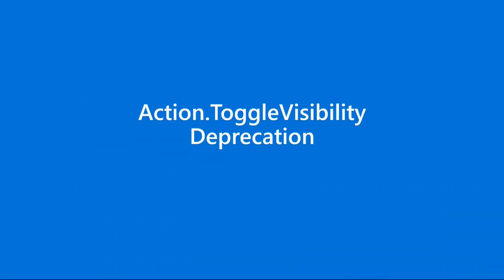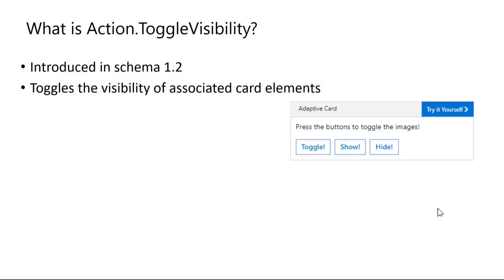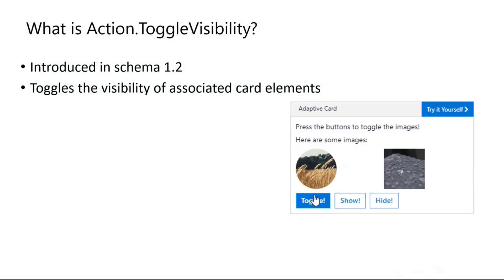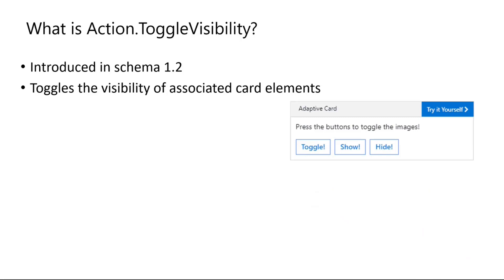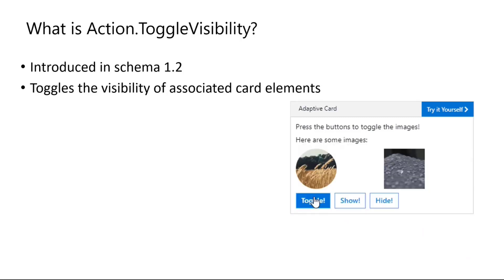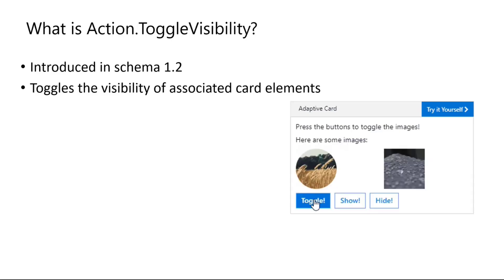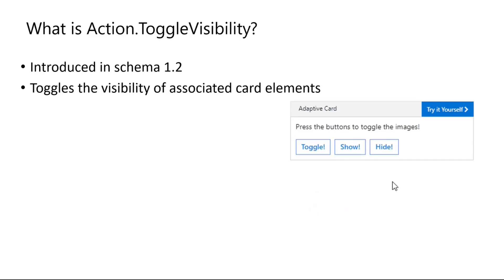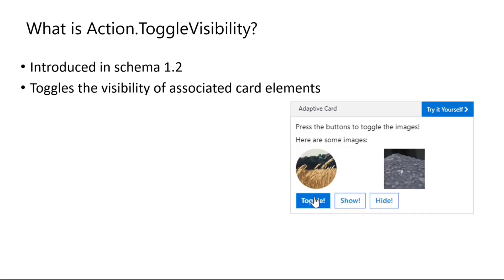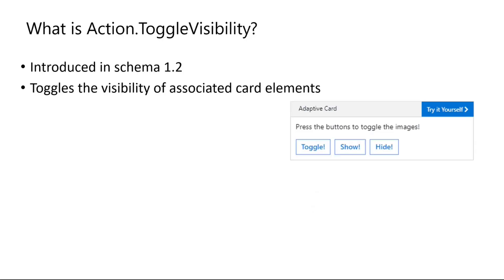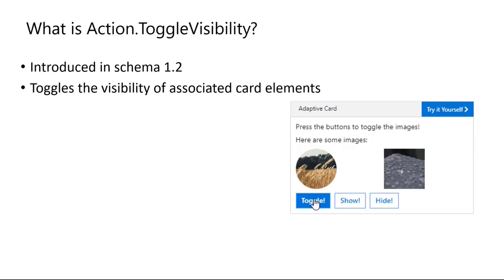Action.ToggleVisibility deprecation. For those not familiar, Action.ToggleVisibility is an action type introduced in schema 1.2 for Adaptive Cards. As the name suggests, it toggles the visibility of associated card elements. As you can see in the GIF, you click the action button — in this case, 'toggle' — and it opens up to show you the associated elements tied with Action.ToggleVisibility.